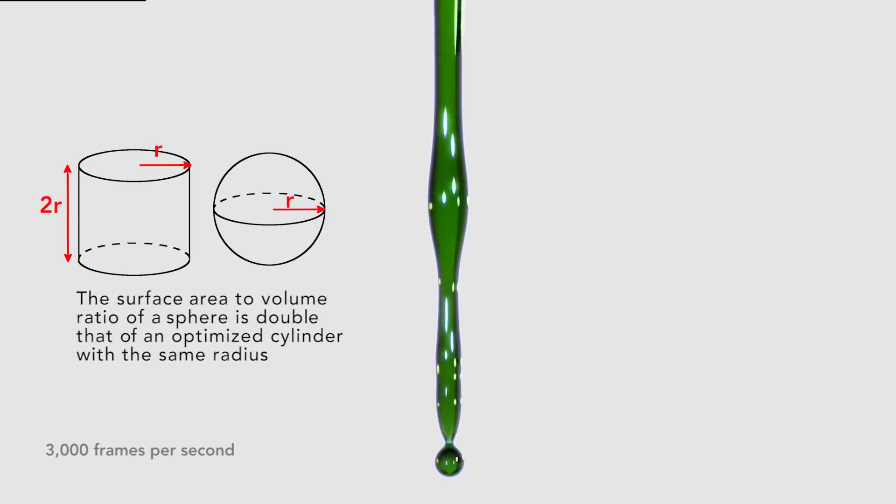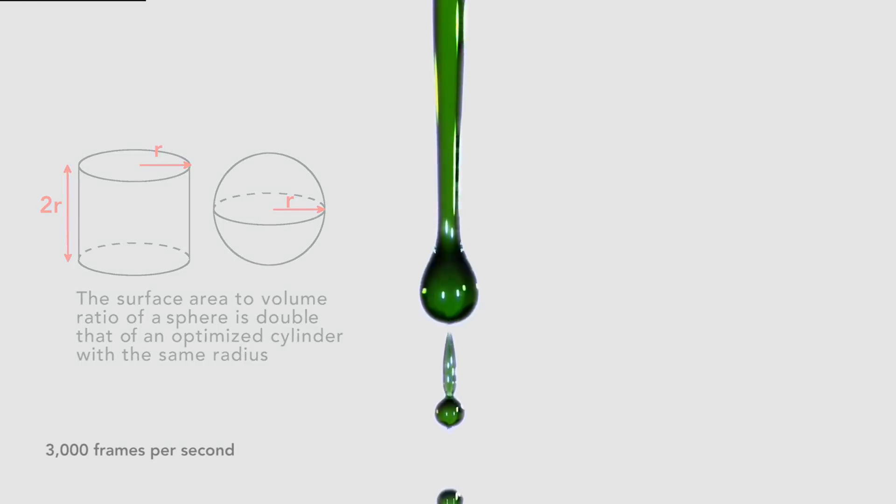For this jetting liquid, that would be a sphere rather than a cylinder. The surface area to volume ratio of a sphere is double that of an optimized cylinder with the same radius. The instability forms quickly.